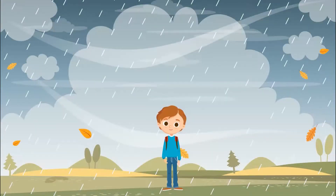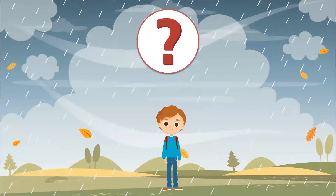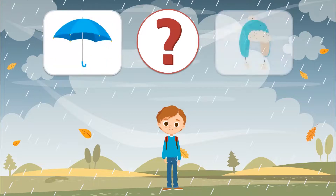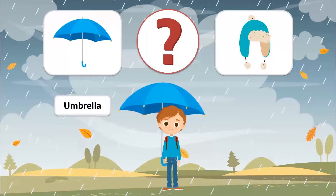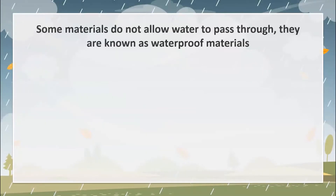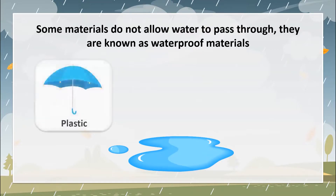Faddis needs to go to school on a rainy day. What can he use to protect him from the rain — an umbrella or a hat? Excellent! He will use the umbrella. It is made of plastic, and plastic does not allow water to pass through. Some materials do not allow water to pass through; they are known as waterproof materials. Examples include plastic and glass.